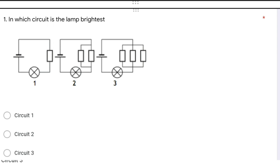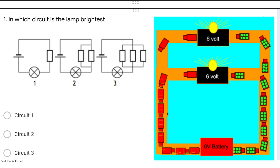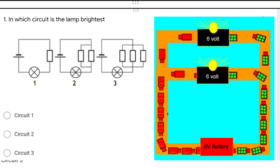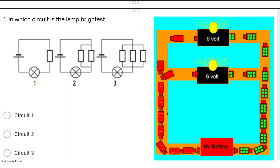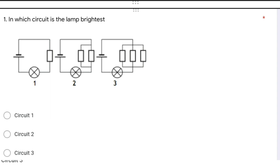The first question is: in which circuit is the lamp brightest? In circuit one there is a cell, a resistor, and a bulb. In circuit two there are two resistors in parallel, and in circuit three there are three resistors in parallel. As per parallel combination of resistors, when we increase the number of resistors in parallel the overall resistance decreases. So circuit three will have the least resistance, and the bulb in circuit three will be the brightest. The answer is circuit three.